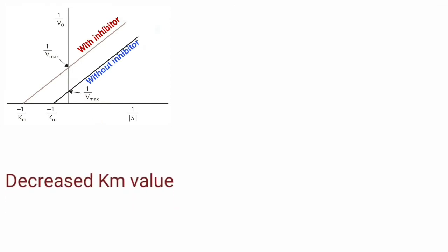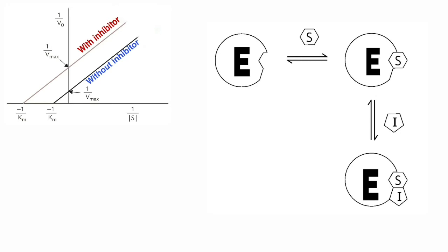Now coming to the reason why Km value is decreased in case of uncompetitive enzyme inhibition. The uncompetitive enzyme inhibitor binds only to the ES complex. It cannot bind with the free enzyme. The requirement for this inhibitor is it requires only ES complex.